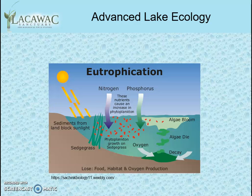Eutrophication is the natural succession of a lake over time caused by increased levels of phosphate, nitrates, and sediments. The increased productivity of a lake because of phosphate and nitrate input can lead to the lake slowly filling in over time.